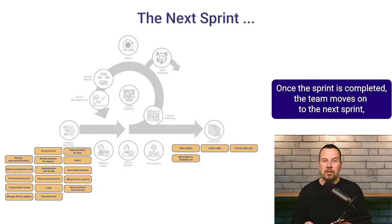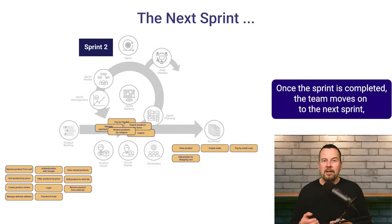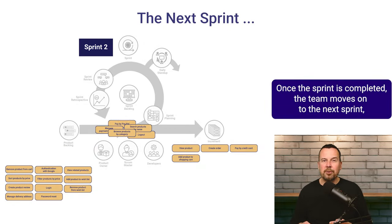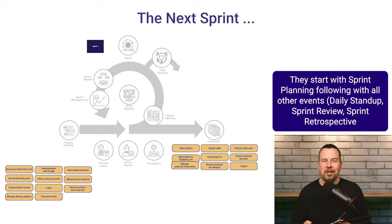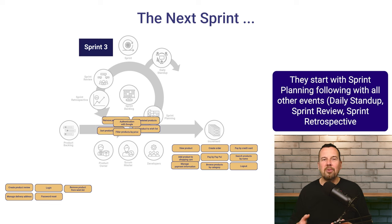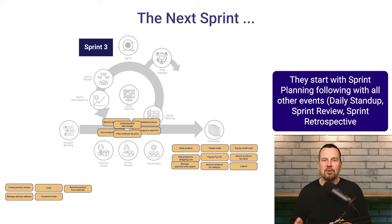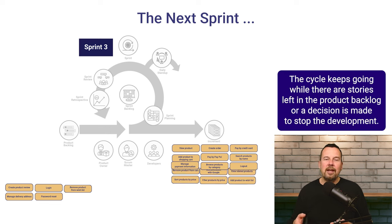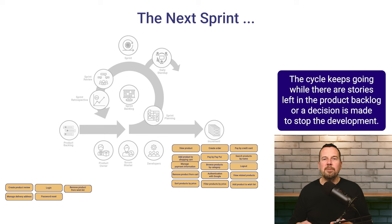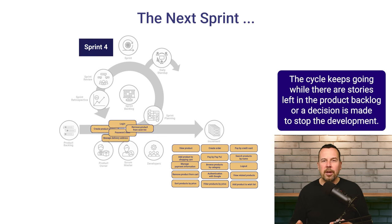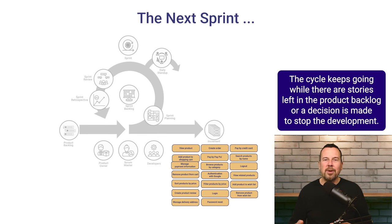Once the sprint is completed, the team moves on to the next sprint, starting with sprint planning and followed by all other events we just described. This cycle keeps going while there are stories left in the product backlog, or a decision is made to stop the development.